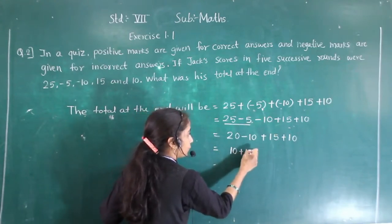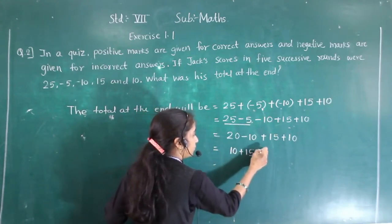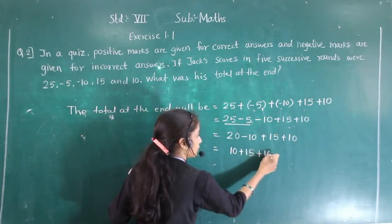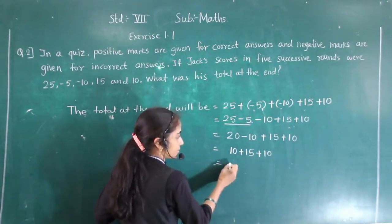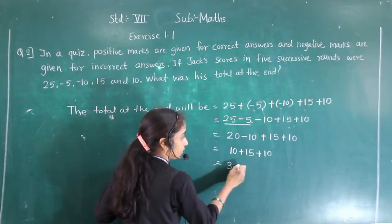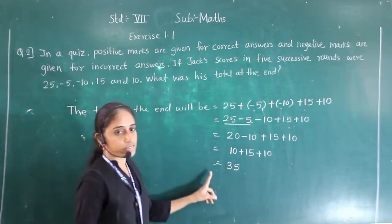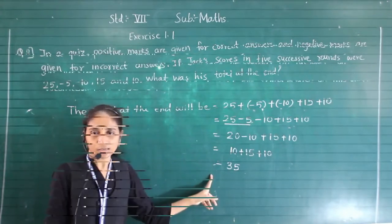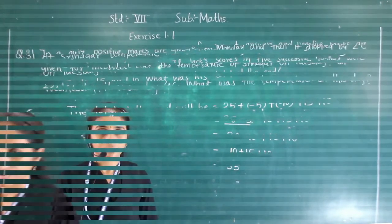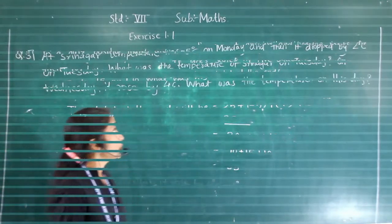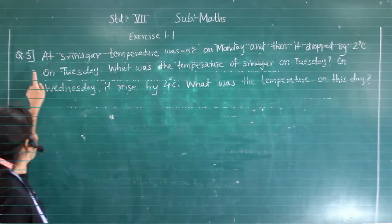Plus 15, plus 10. So the answer will be 35. Answer is 35. Now let's go to Question number 3.